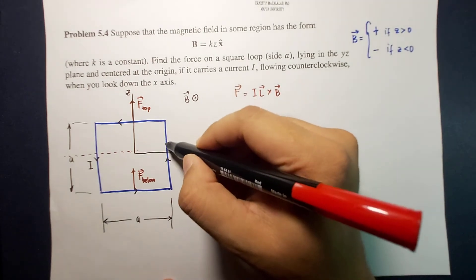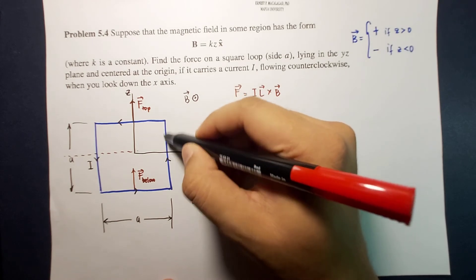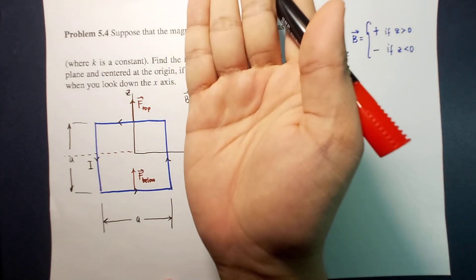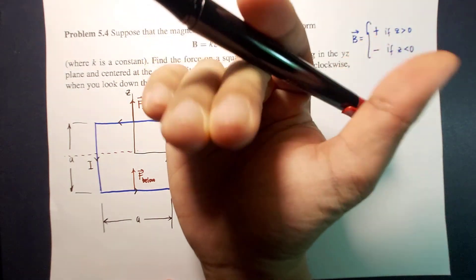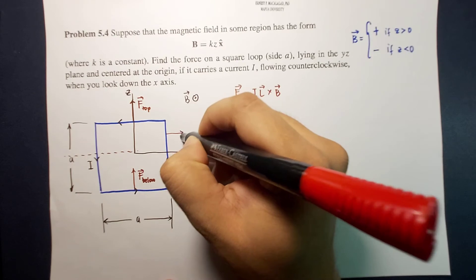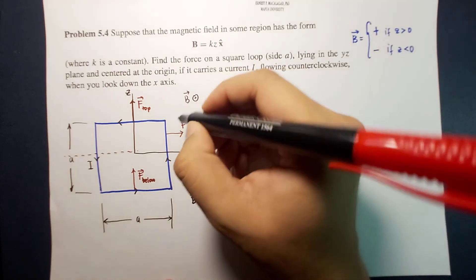when the line, when this segment of this wire, the current is going up, so I cross B, the direction is to the left. To the right. So this is F for the right and above.